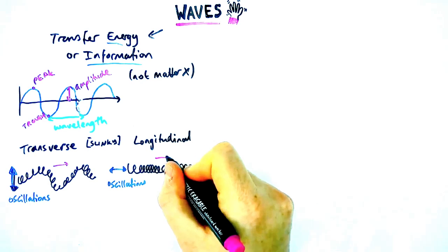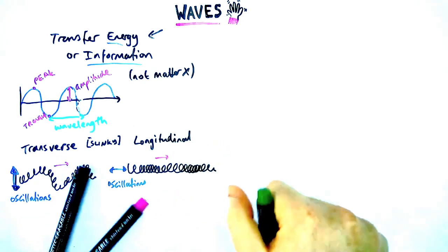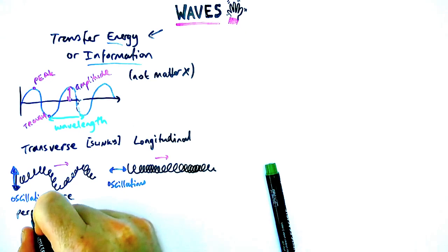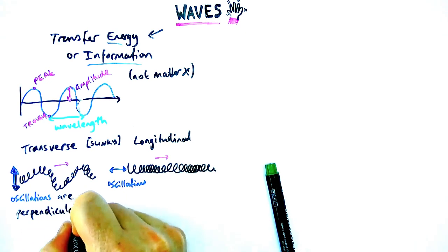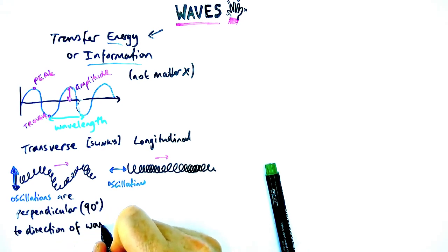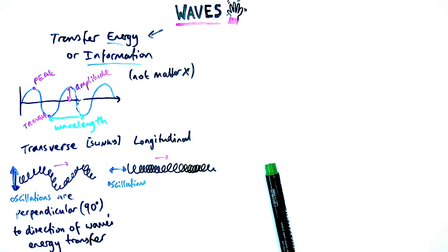How we'd say that in words, and it's a really important definition, you've got to get this word perfect, is that for transverse waves, the oscillations are perpendicular or at right angles or 90 degrees to the direction of energy transfer or the wave's energy transfer.